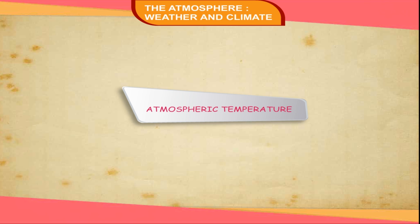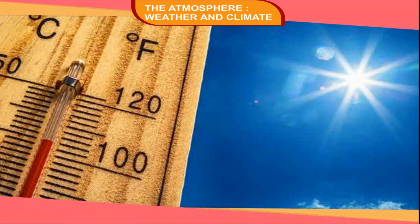Atmospheric Temperature. The sun is the main source of heat and light for the earth. It radiates energy in all directions. Being far away from the sun, the earth receives only a very small fraction of this energy. The solar energy received by the earth is called solar insolation.